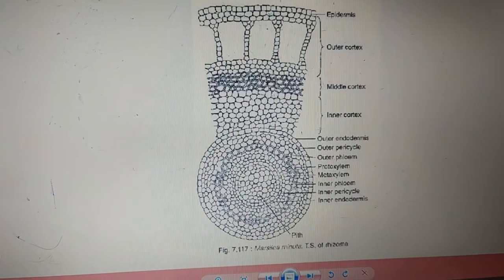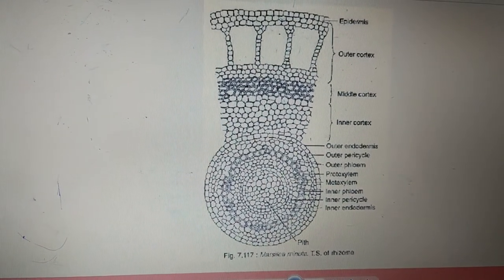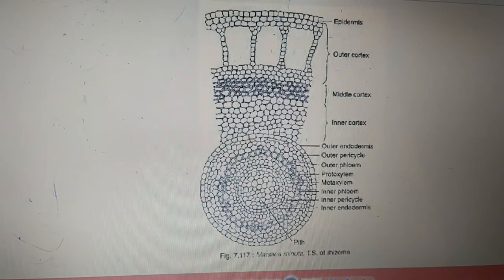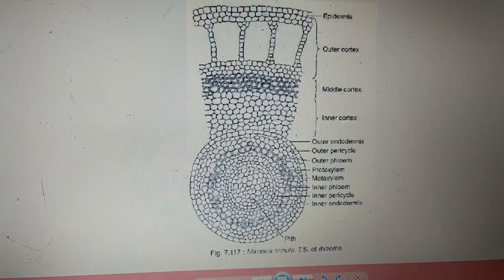Such kind of an arrangement of stele is called as amphifloic solenostele. So this kind of stele is observed in the rhizome of Marsilia. Thank you.